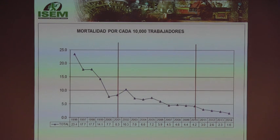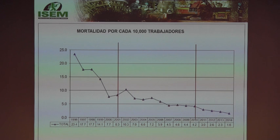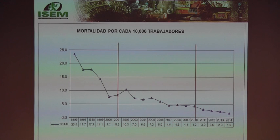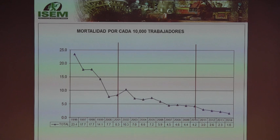Looking at the indicator of deaths per 10,000 workers, we can see how it has decreased year after year. In 1996, 23 people per 10,000 workers lost their lives. That figure has been reduced to 1.6 — a reduction of more than 90%. That is a great achievement, though it does not mean we can rest. We must keep working. Two red lines on the graph represent the 2001 regulation DS 046 and the 2010 regulation DS 055, showing some breaks or inflection points in the data.